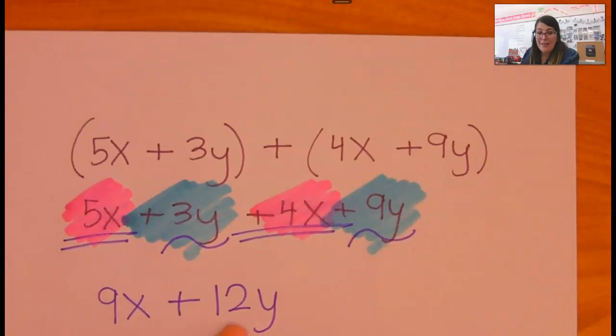And when you type this into Buzz, don't put any spaces. Just type in 9x plus 12y.